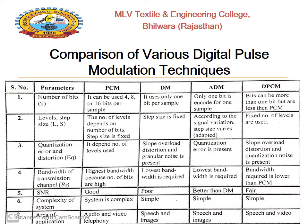The next slide presents a comparison of various digital pulse modulation techniques across parameters: number of bits, level or step size, quantization error or distortion, bandwidth, transmission channel bandwidth, SNR, complexity of system, and area of application. For number of bits: PCM uses 4, 8, or 16 bits per sample; DM uses only 1 bit per sample; ADM also encodes only 1 bit per sample; and DPCM uses more than 1 bit but fewer bits than PCM.